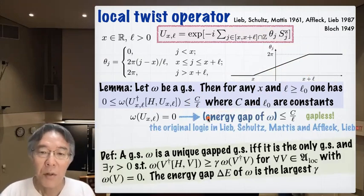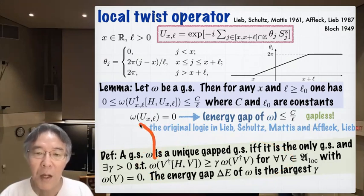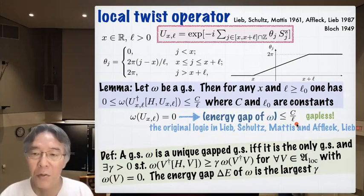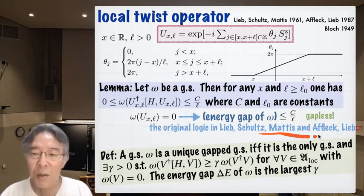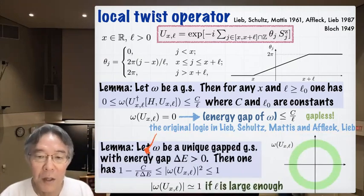How do you use this? First, suppose the expectation value omega(U) is zero. Then if you recall the definition of a gapped ground state, this inequality implies that the energy gap of omega is bounded from above by c/l. Since l can be made as large as you want, this indicates that the ground state omega is either gapless or degenerate. This was the logic originally used by Lieb-Schultz-Mattis and Affleck-Lieb to prove their theorems.